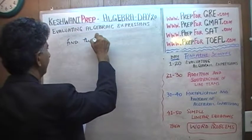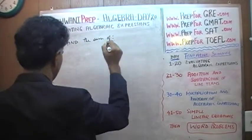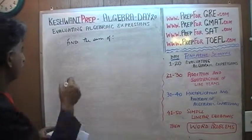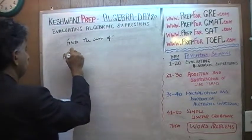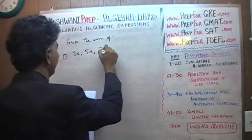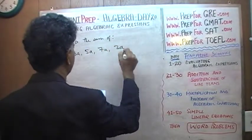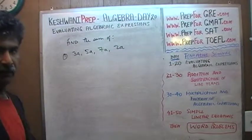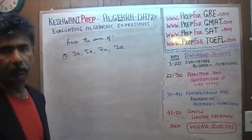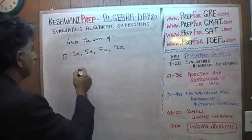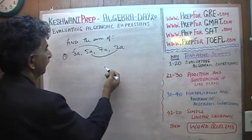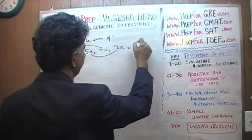Find the sum of the given terms. Number 1: 3a, 5a, 7a, 2a. We just have to find their sum, and because they are all a's, they are all like terms, we just have to add them up. 7 plus 3 is 10 and plus 5 plus 2 is 17, so it's just 17a.